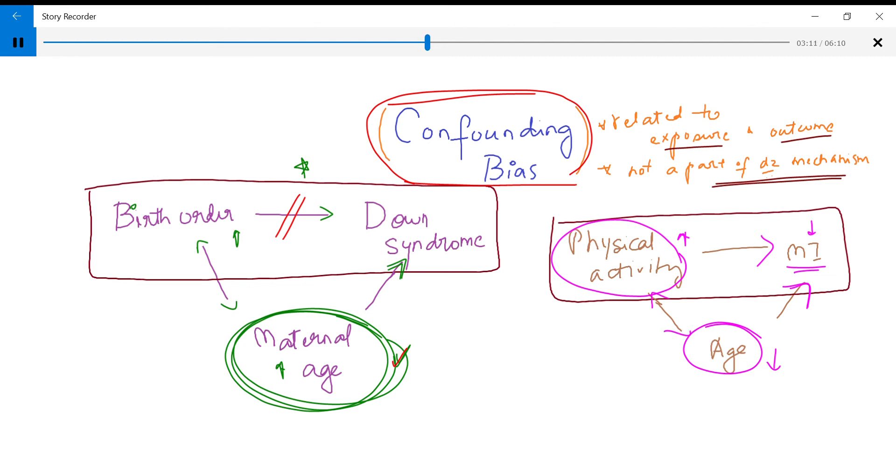And these two are related, like lower the age, higher the physical activity, like lower the age, higher the physical activity. And then these patients tend to have a decreased incidence of MI.